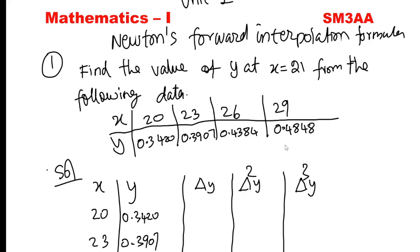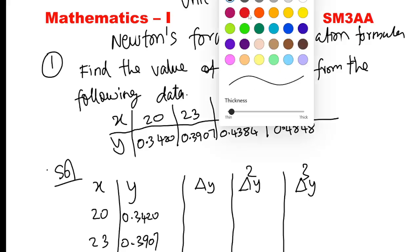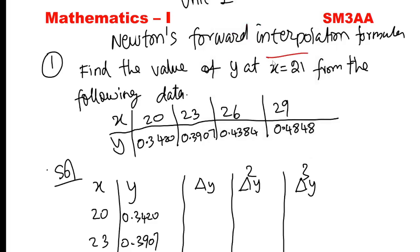So Newton's forward interpolation formula — find the value of y at x equal to 21 from the following data. Here x values are 20, 23, 26, 29, and the corresponding y values are given.